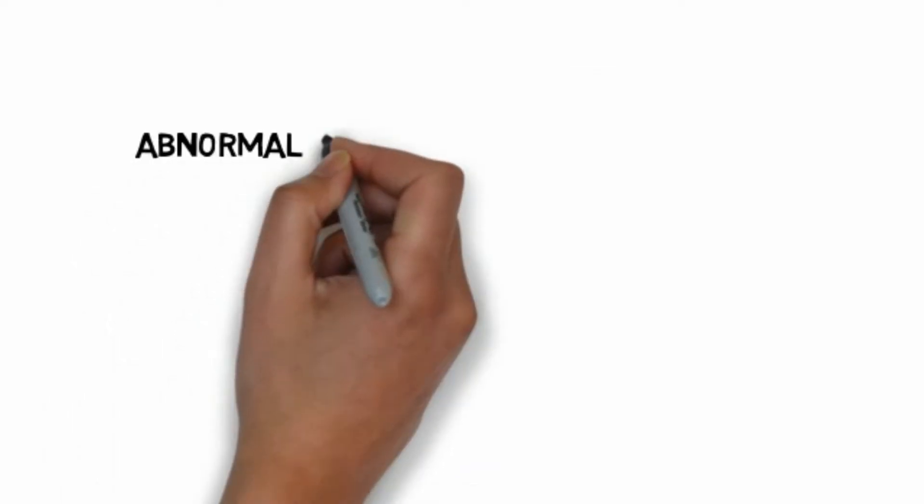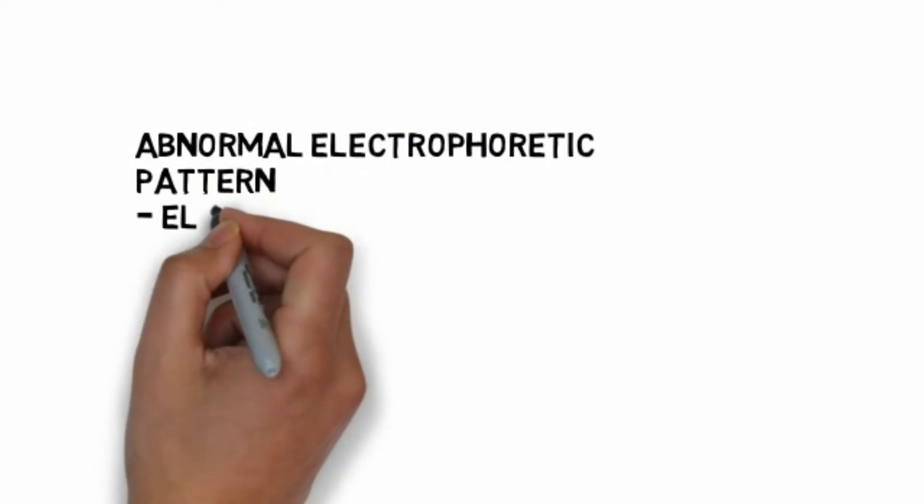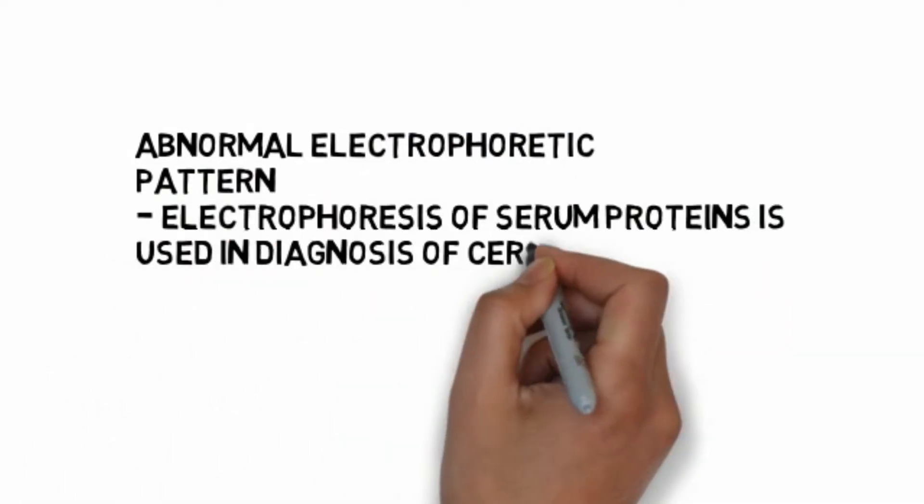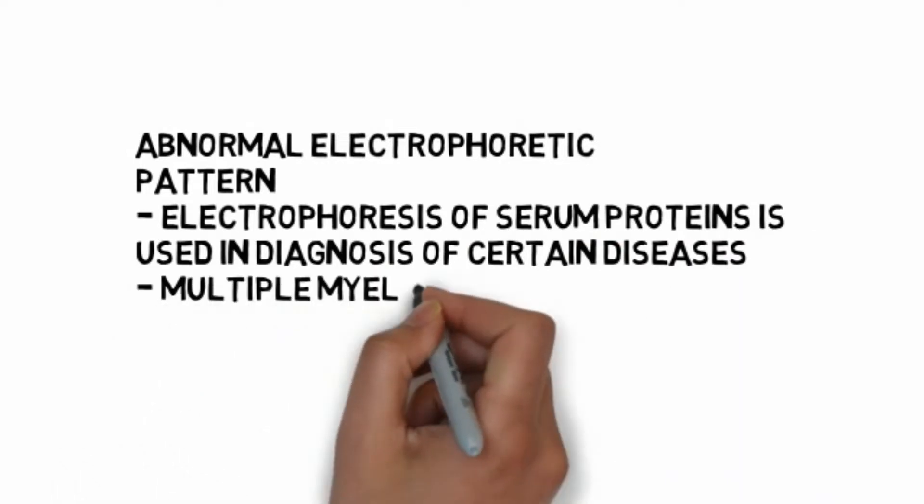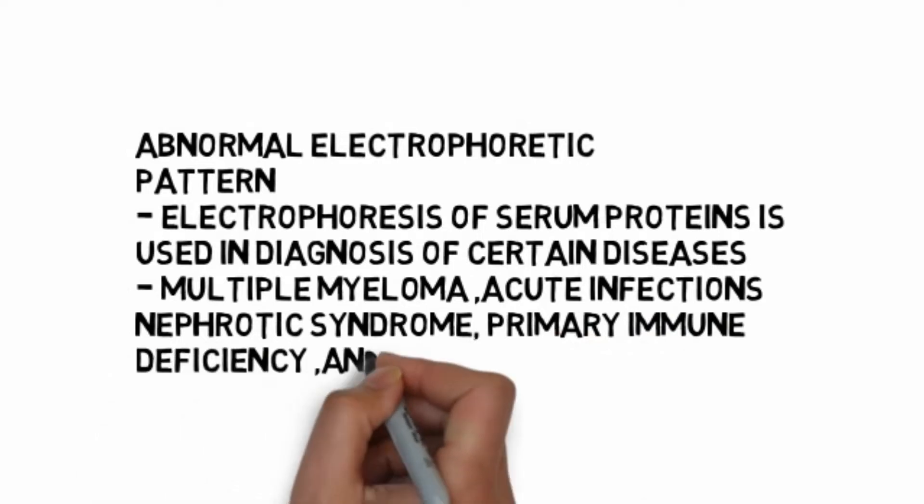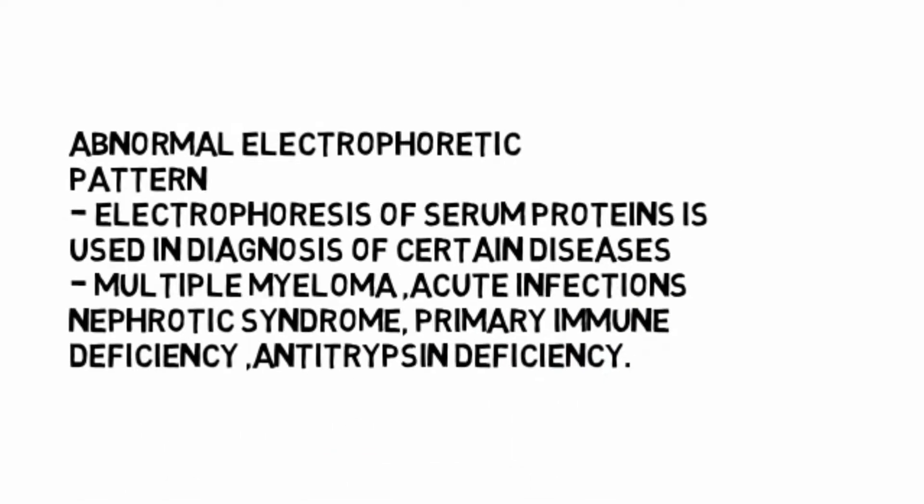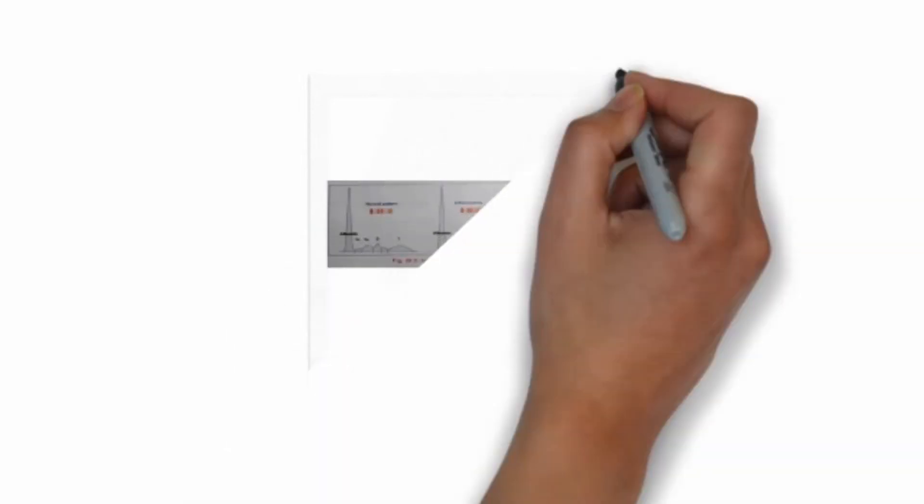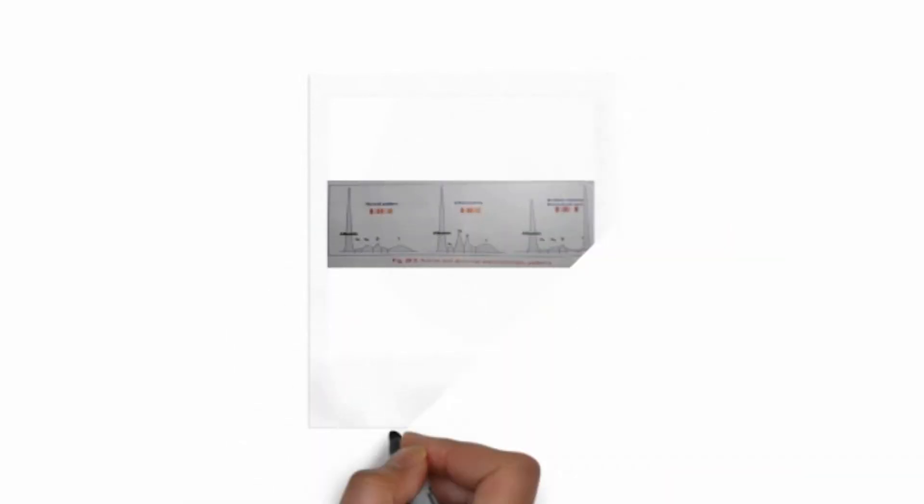Electrophoresis of serum proteins is used in diagnosis of diseases like multiple myeloma, acute infections, nephrotic syndrome, primary immune deficiency, and alpha-1 antitrypsin deficiency. In these diseases there is an abnormal electrophoretic band formed which helps in diagnosis.